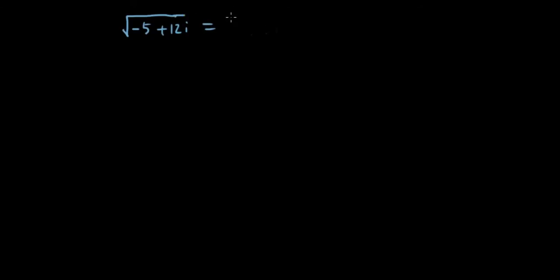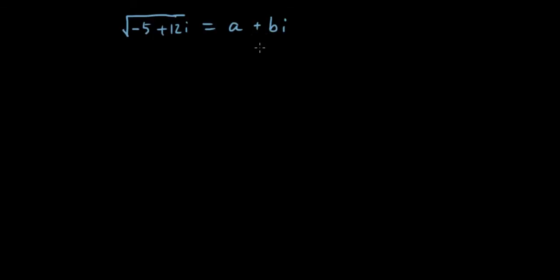We know that the answer is going to be in the form a plus bi, because if you square root a complex number you should get a complex number as well. So we just need to find what a is and what b is.